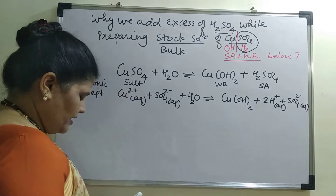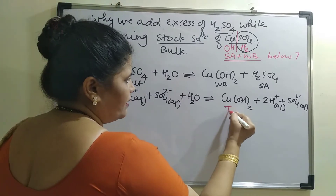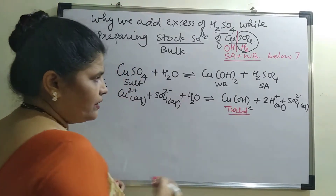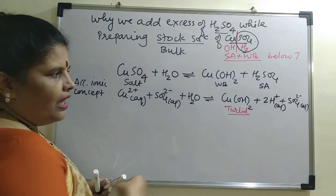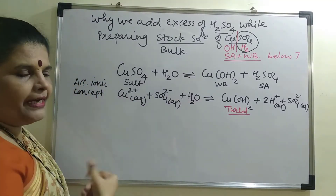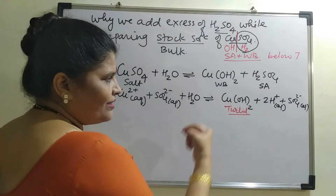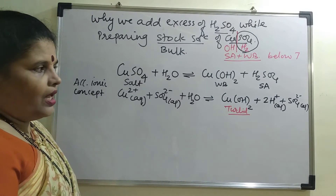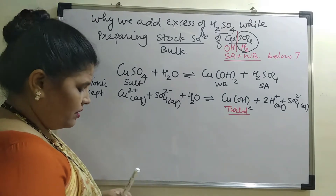Now, copper hydroxide forms a turbid solution. Copper hydroxide is not soluble in water, and so it gives turbidity to the solution. We have to overcome this turbidity, and because of that we are adding H₂SO₄. The question is: how does H₂SO₄ work here?